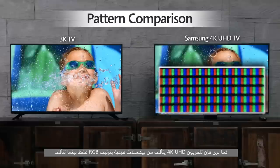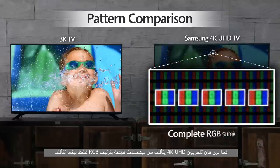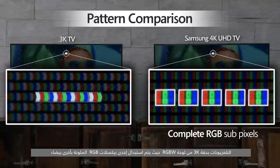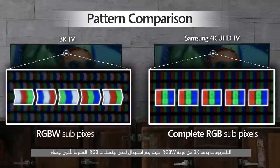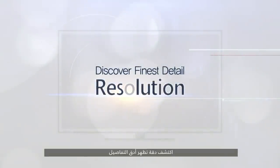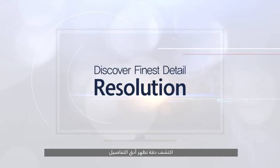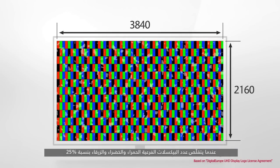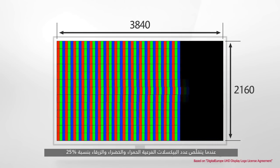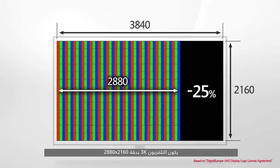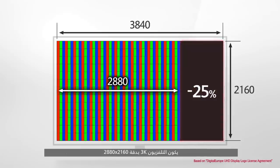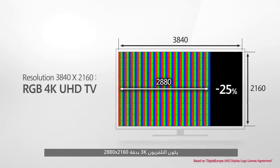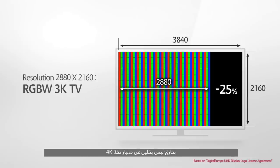We can see that the 4K UHD TV is only comprised of RGB subpixels, while a 3K TV with an RGBW panel has one of the RGB subpixels replaced with white. The fact that the number of the R, G, and B subpixels decreased by 25 percent means that this is a 3K television with a resolution of 2,880 by 2,160 — well below the standard for 4K.